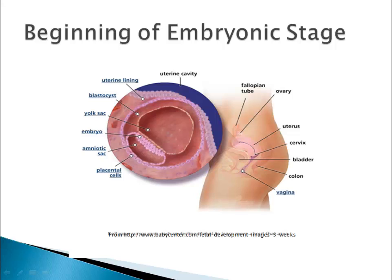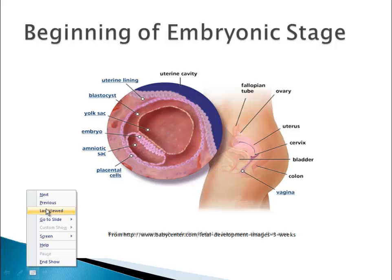Cells that haven't differentiated at the beginning of the embryonic stage are called stem cells because they can become anything. If you hear people talk about embryonic stem cells, they're almost certainly using the wrong term — stem cells are best at about seven days after conception, which would technically make them zygotic stem cells. We're also beginning to be able to create stem cells from adult cells, which is a very interesting and evolving topic.